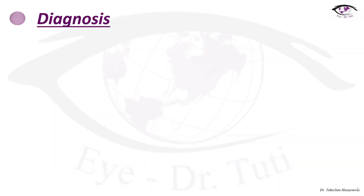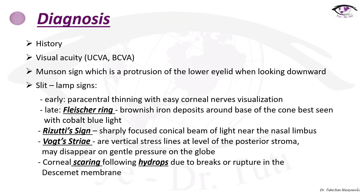Diagnosis of keratoconus includes history, visual acuity corrected and uncorrected, Munson sign which is a protrusion of the lower eyelid when looking downward, slit lamp signs: Fleischer ring, Rizzuti's sign, Vogt's striae, and scarring following acute hydrops.